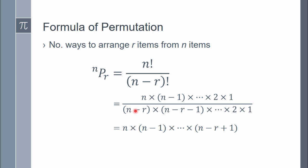Without going too much into the math detail, nPr is equivalent to multiplication starting with n, then n minus 1, n minus 2, until n minus r plus 1. Because all the smaller terms in the factorial will cancel out each other until exactly at n minus r, so what is left is only until n minus r plus 1. We are going to write this formula in our C/C++ code.